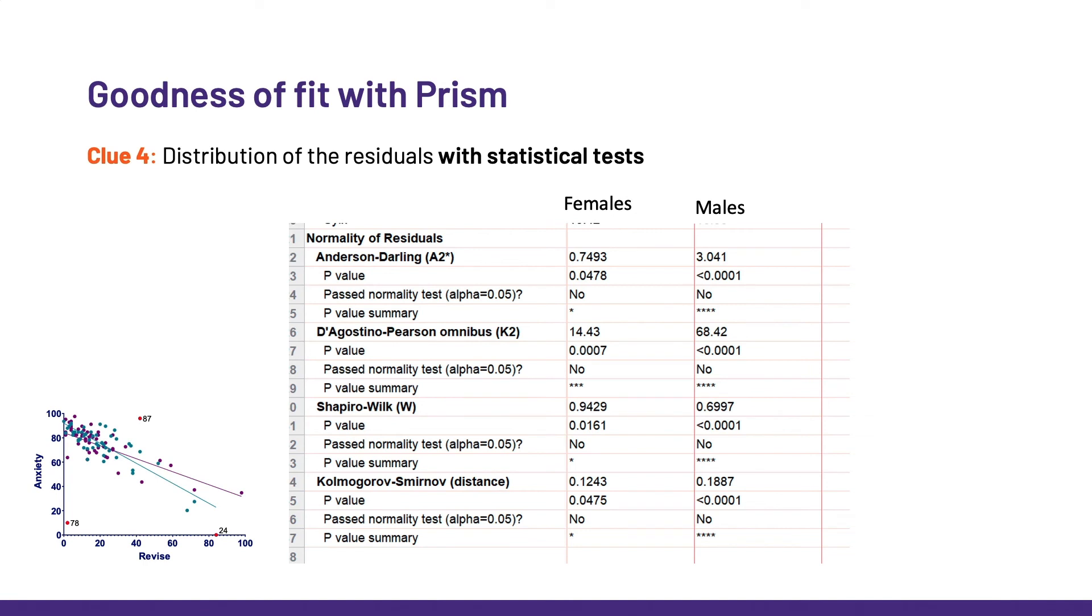Where we check the distribution of the residuals with statistical tests, and Anderson-Darling and D'Agostino and Pearson do not like the residuals one bit. So the more we go through the clues, the more we get a feeling that our model is not a good fit for this data. And now the last clue, perhaps my favorite: the QQ plot.